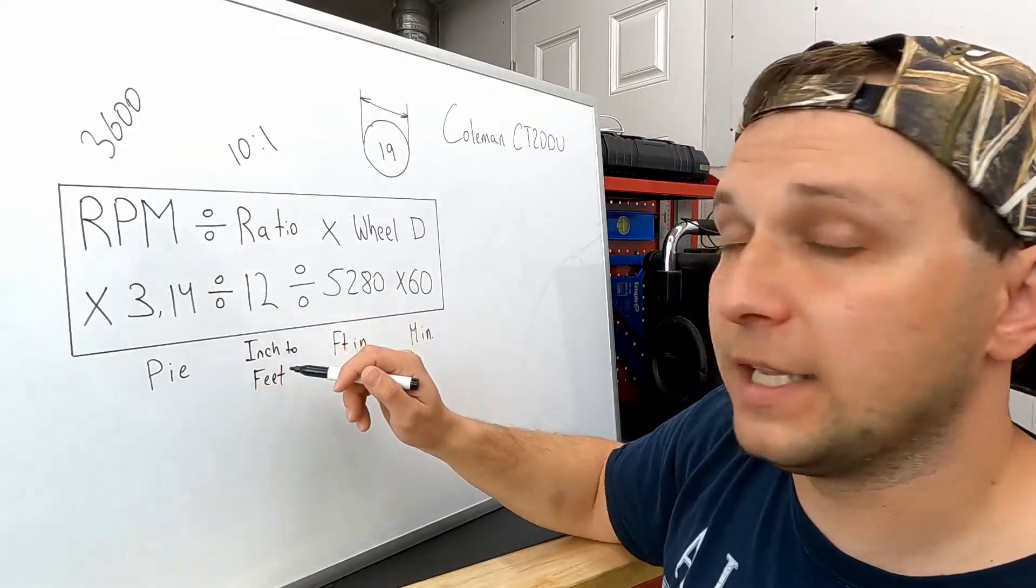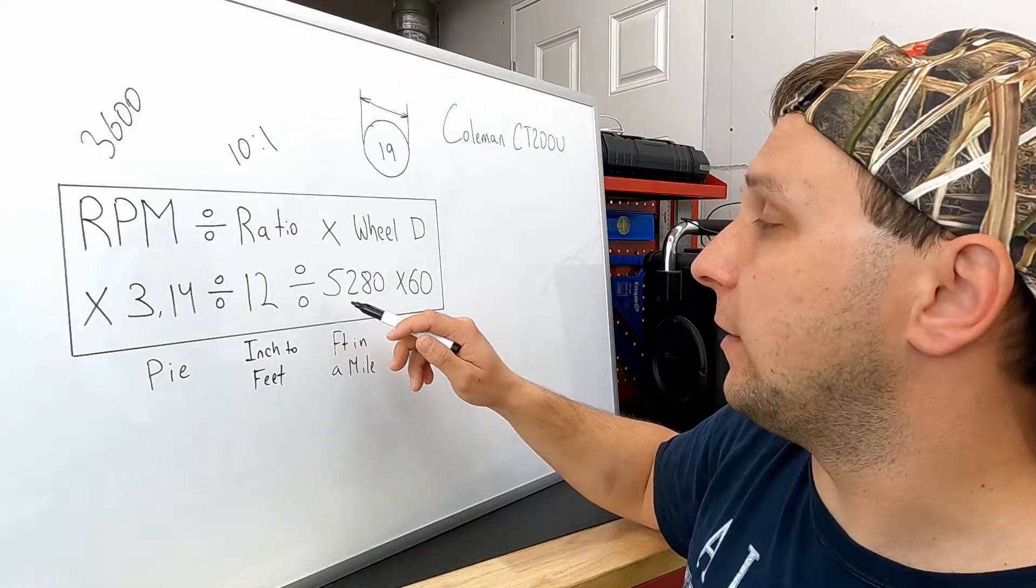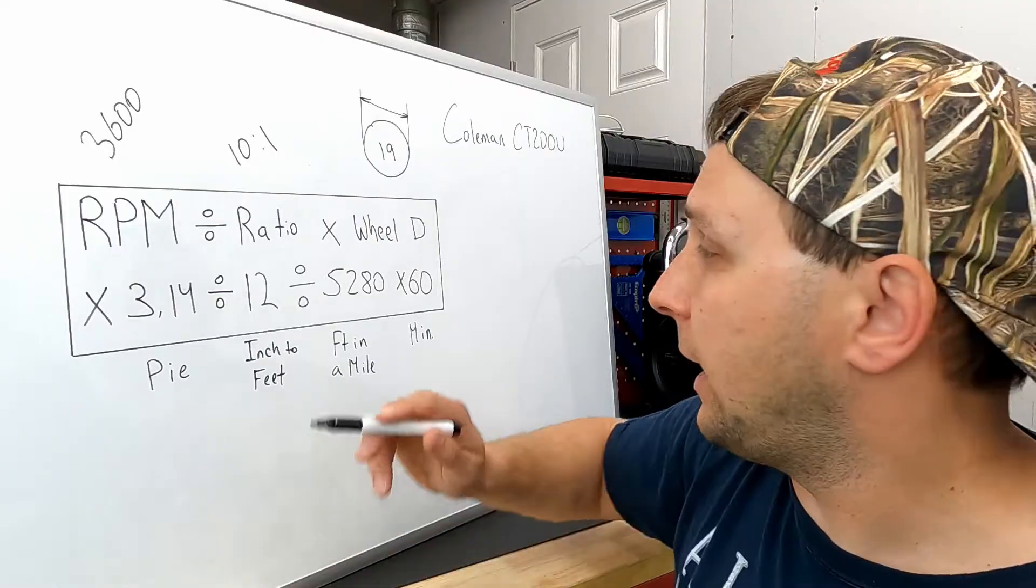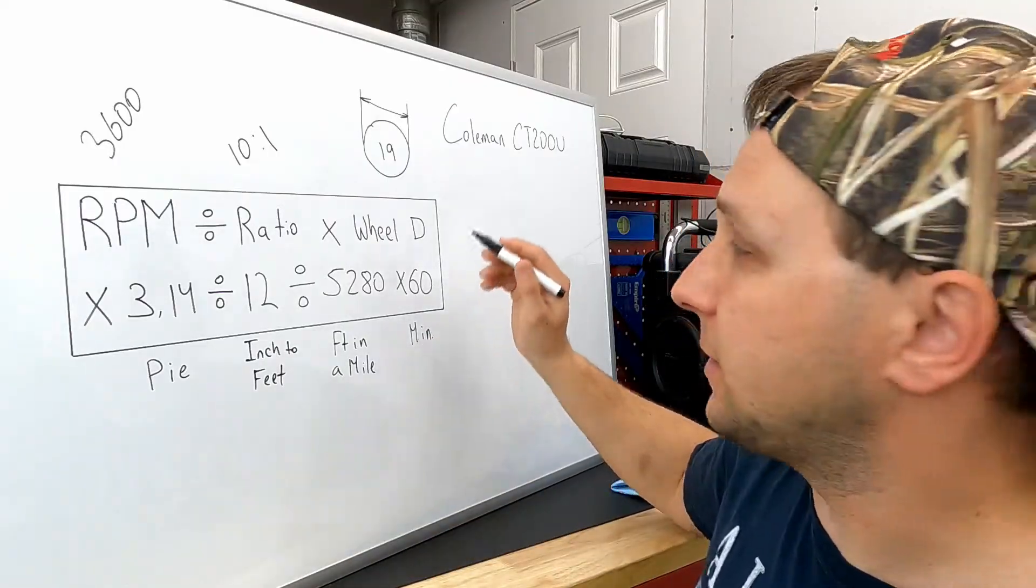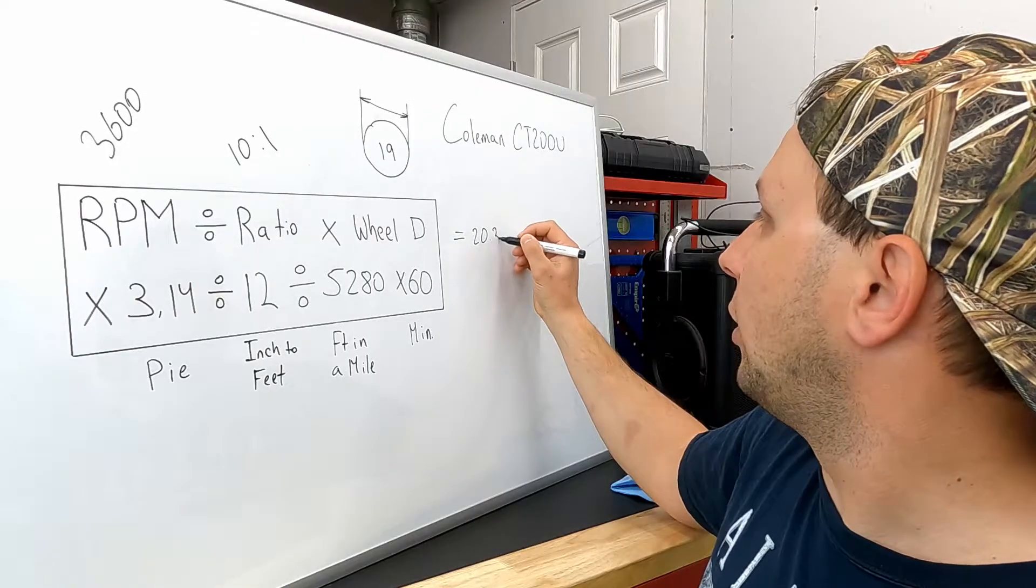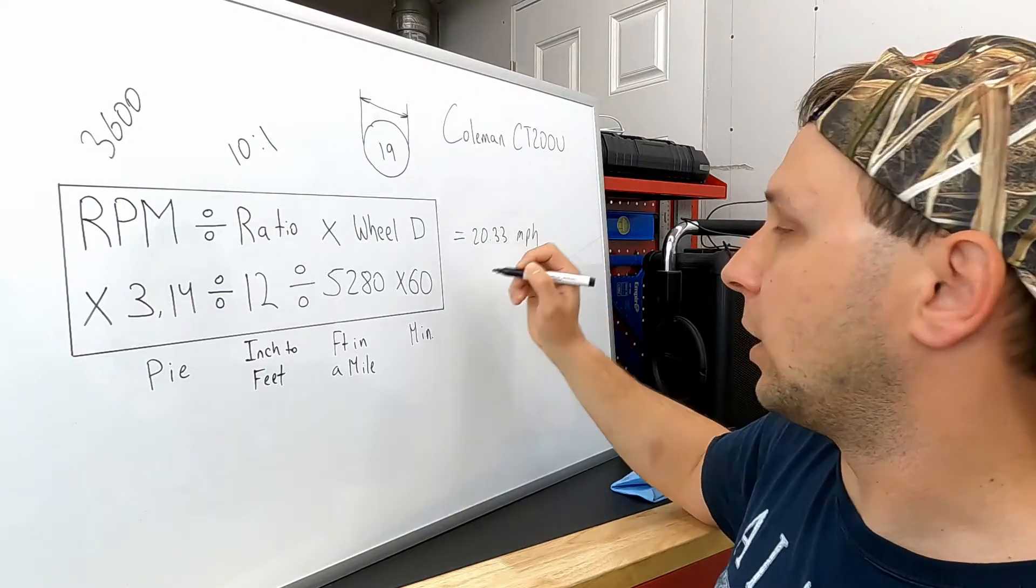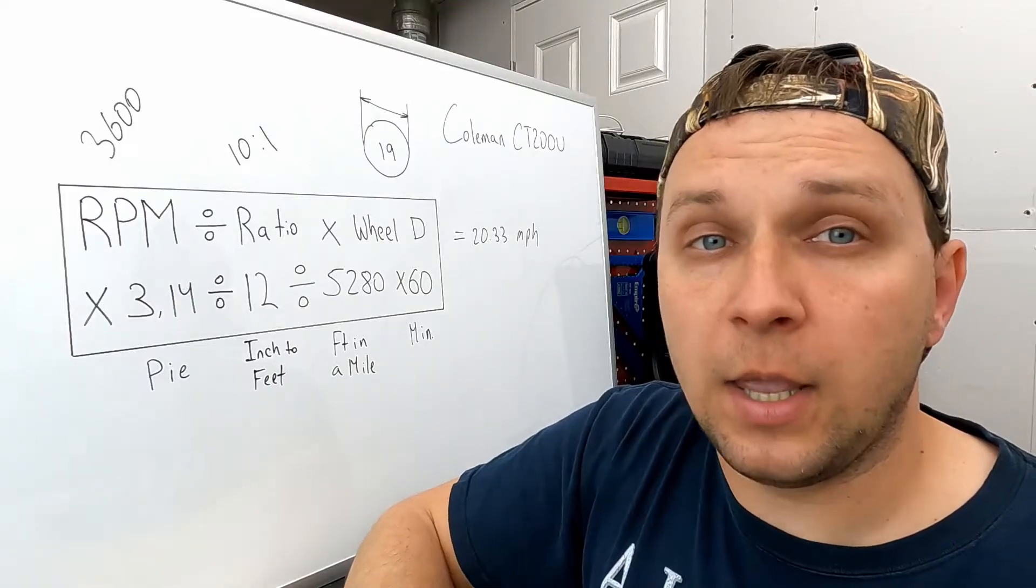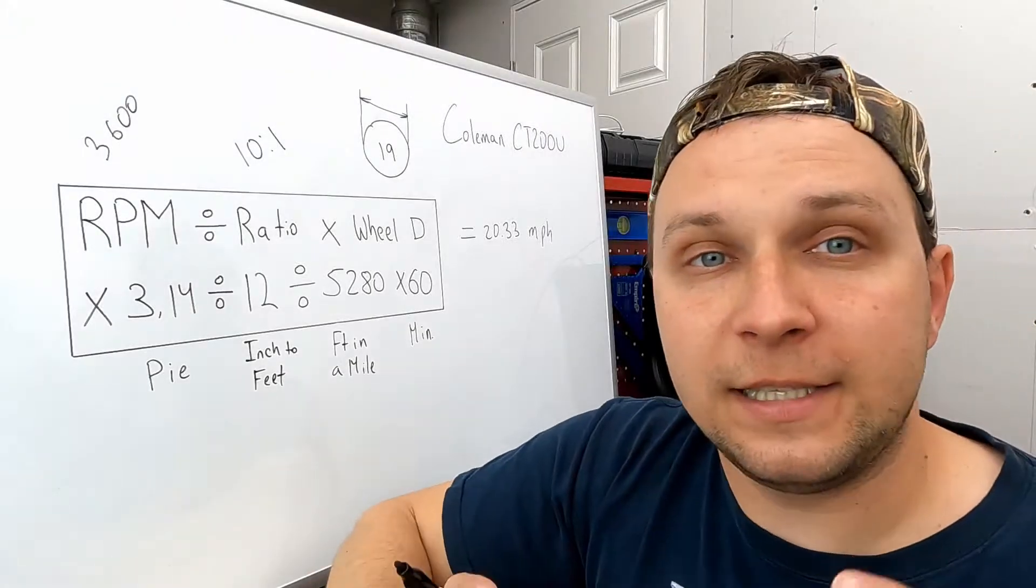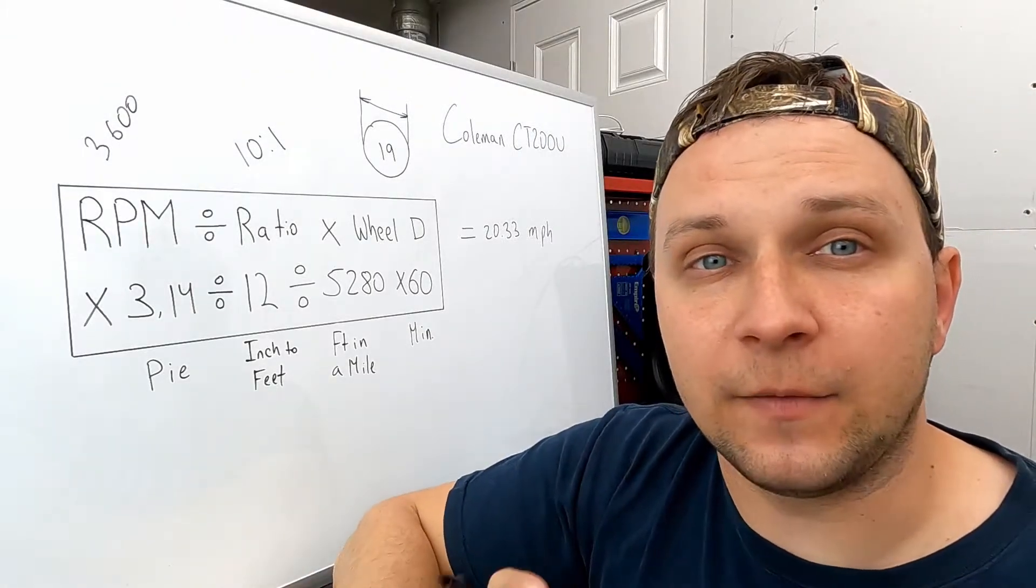3600 divided by ratio, ratio is 10 to 1, times your wheel diameter, it's 19, times pi, that's 3.14, then divided by 12, that's how many inches are in a foot, and then divided by 5280, that's how many feet are in a mile, and then times 60 minutes. So we're gonna end up with 20.33 miles per hour. That's with the stock Coleman CT 200U minibike.